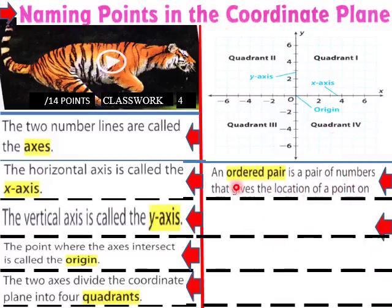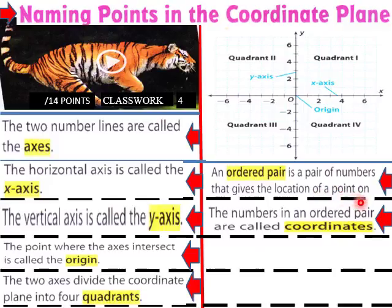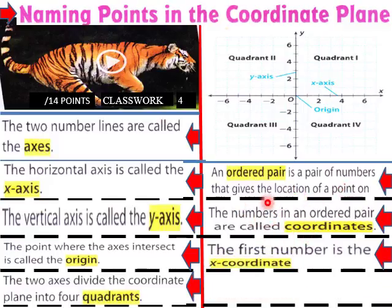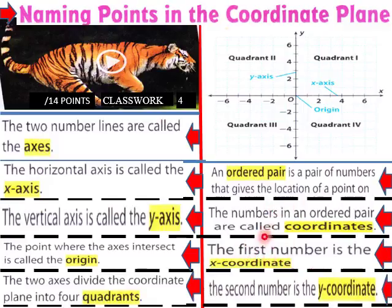An ordered pair is a pair of numbers that gives the location of a point on the coordinate plane. The numbers in the ordered pair are called coordinates. The first number is the x-coordinate and the second number is the y-coordinate. So here is a very important page in your classwork, students — 14 points, lots of points here to begin.